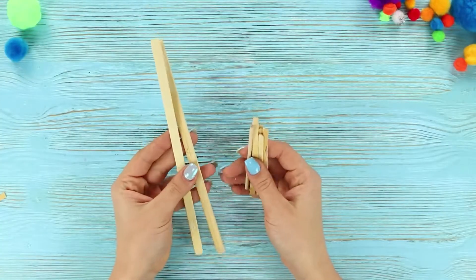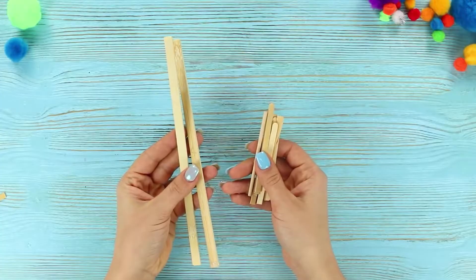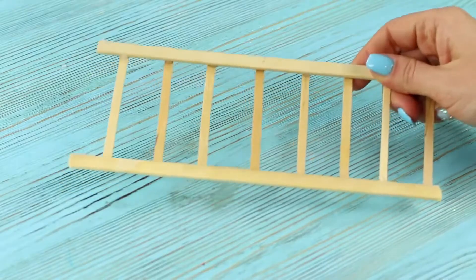For another piece of workout equipment, you need wooden sticks. Glue a ladder out of them. This will be wall bars.